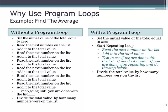With a program loop, your program would look conceptually something like this. Set the initial value of the total equal to zero. Start the repeating loop. Read the next number on the list. Add it to the total. Test to see if you are done with the list. If not, repeat the loop again. If you are done, stop repeating and go to the step below, which is divide the total value by how many numbers were on the list.